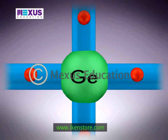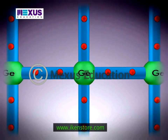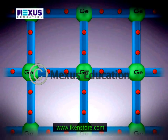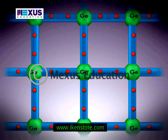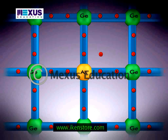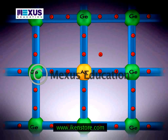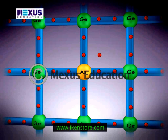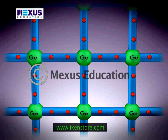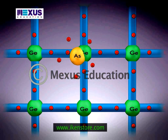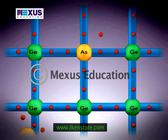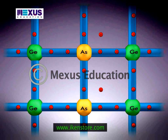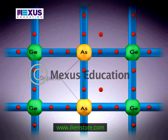Extrinsic Semiconductors. The conductivity of an intrinsic semiconductor is very less at room temperature. To increase the conductivity, a small amount of external impurity is added to the pure semiconductor. Such a semiconductor then becomes an impure or extrinsic semiconductor. The process of deliberate addition of a very small amount of impurity into an intrinsic semiconductor to increase its conductivity is called doping, and the impurities are called dopants.